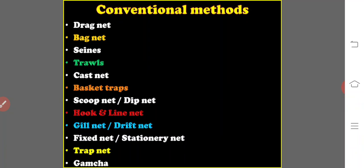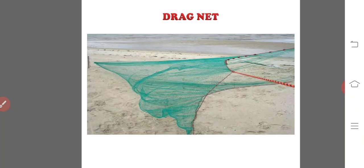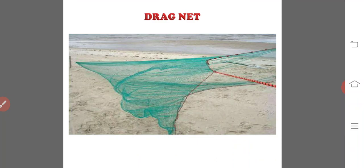Different types of fishing nets and gears available include: drag net, bag net, seines, trawls, cast net, basket traps, scoop net or dip net, hook and line, gill net, fixed net or stationary net, trap net, and the gamcha. Let us see these one by one, starting with the drag net.